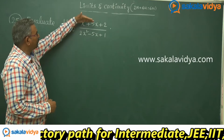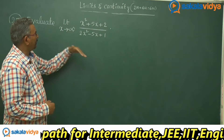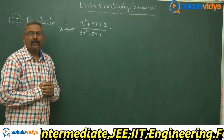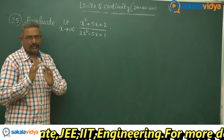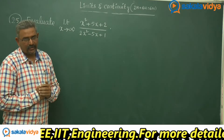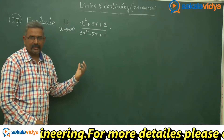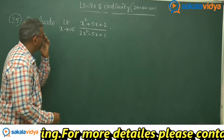Here, divide both numerator and denominator by x squared. After that, just substitute the limit. Then we get the answer. So, let us solve it now.